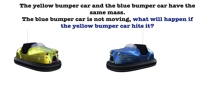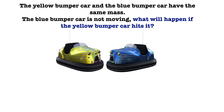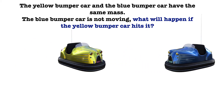The yellow bumper car and the blue bumper car again have the same mass, but this time the blue bumper car is not moving. So what will happen if the yellow bumper car hits it? Since they have the same mass, the action force that the yellow puts onto the blue will cause it to move backward, and the blue's reaction force on the yellow will cause it to stop.